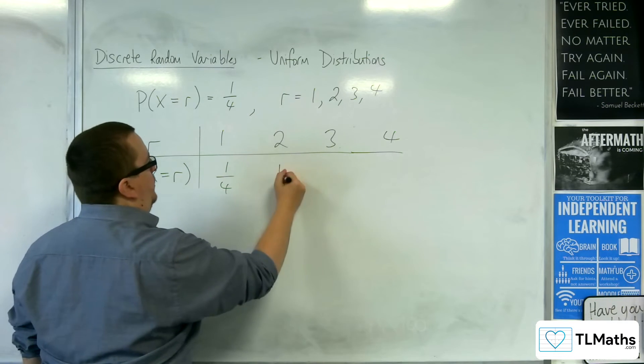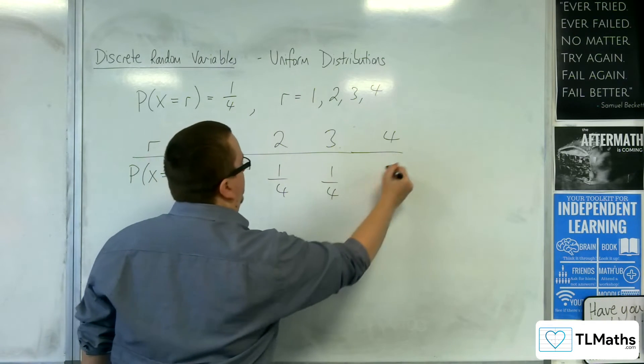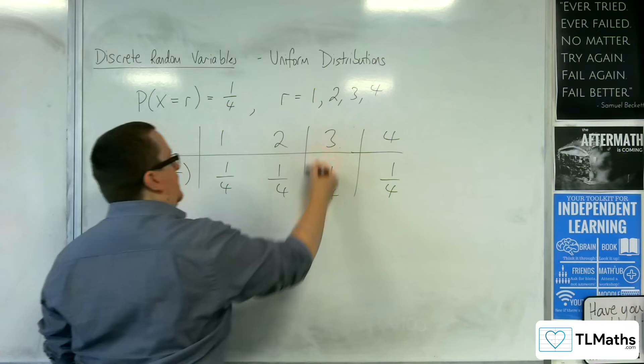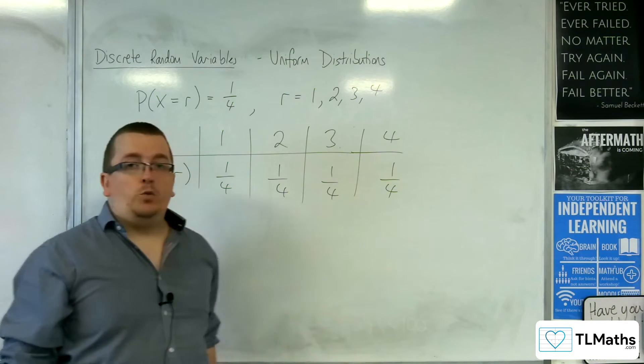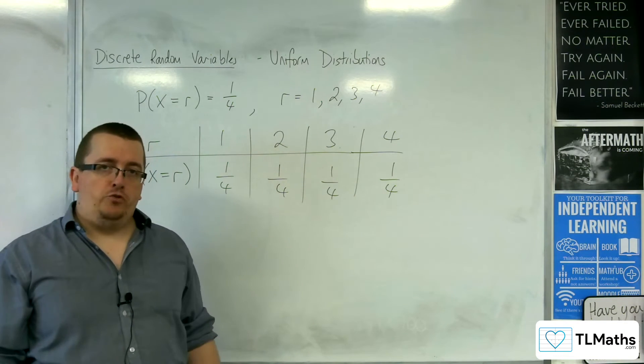And each one of these has the same probability. It needs to have the same probability in each one in order to be a uniform distribution.